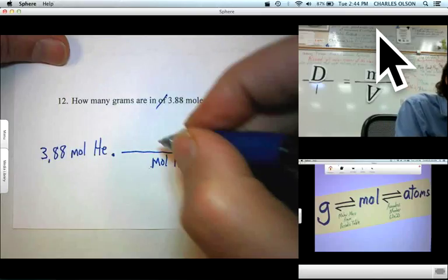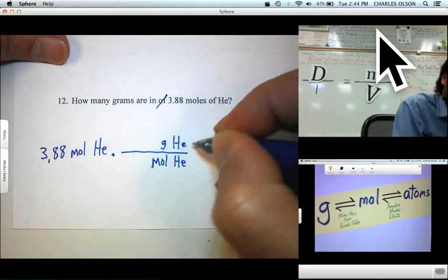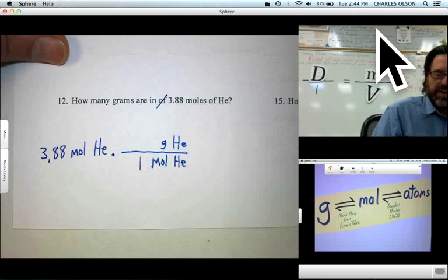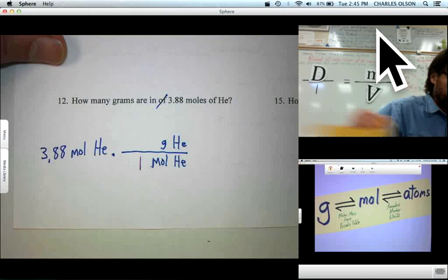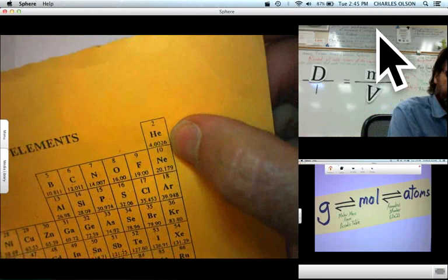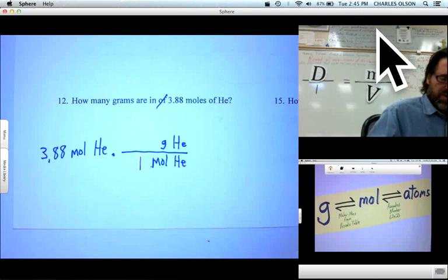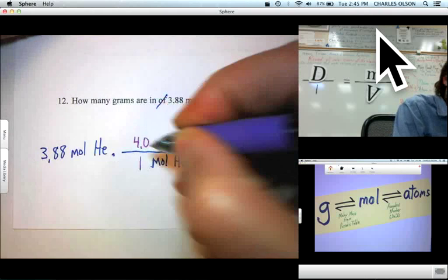So we'll go directly from moles of helium to grams of helium. And we know we always put a 1 in front of mole in conversion factors. So the question becomes, how many grams of helium per mole? Let's look at our periodic table. There's helium. We're going to use 4.0 grams per mole. So, 4.0 grams per mole.